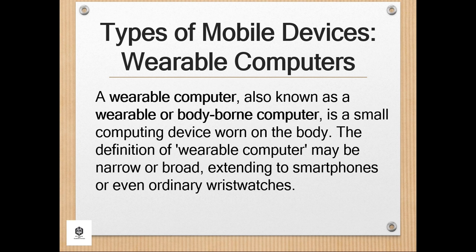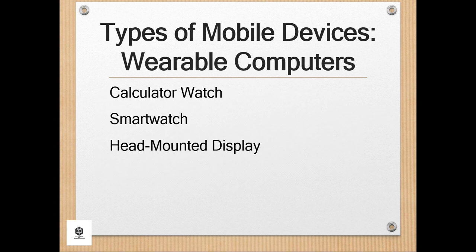Wearables are typically worn on the wrist, like fitness trackers, hung from the neck like a necklace, strapped to the arm or leg like smartphones when exercising, or on the head as glasses or a helmet, though some have been located elsewhere, on a finger or in a shoe. Devices carried in a pocket or bag, such as smartphones, and before them, pocket calculators and PDAs, may or may not be regarded as worn. Examples of wearable computers are calculator watch, smartwatch, and head-mounted display.